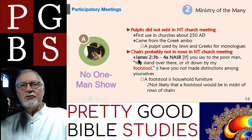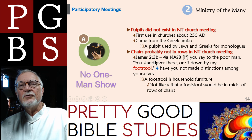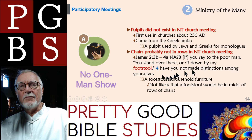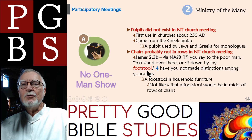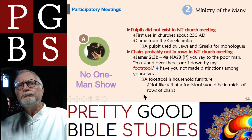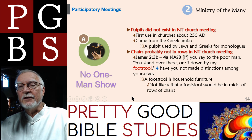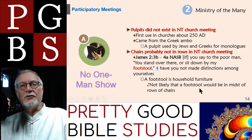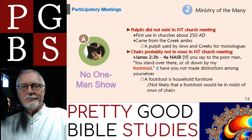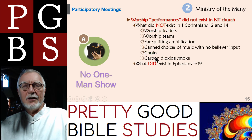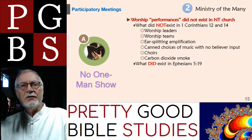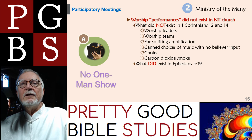Another thing that did not exist: chairs in rows. Chairs were probably not put out in rows in the New Testament church meeting. James 2:3-4: 'If you say to the poor man, you stand over here or sit down by my footstool' — a footstool is household furniture, not something you put in the middle of a row of chairs. So the New Testament church meeting was in a home, gathered around, probably not lined up in chairs in a row. Also, worship performances did not exist in the New Testament church.